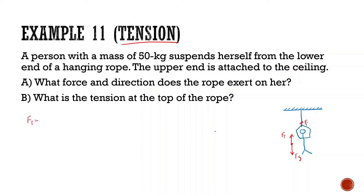Since she's not moving, the force of tension is going to be equal to the force of gravity. So 50 times 10 equals 500. This would be equal to 500 Newtons, and this would be in the upward direction.